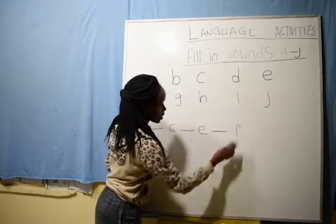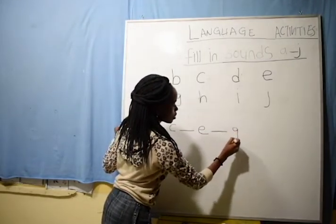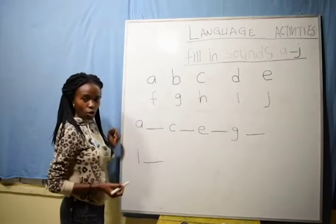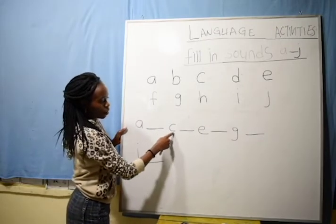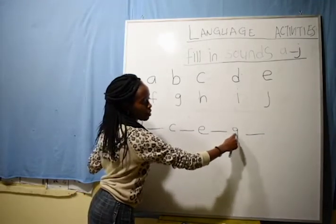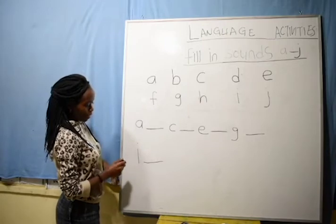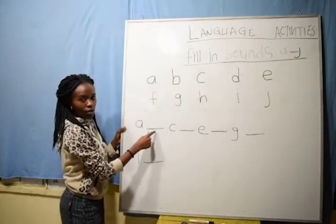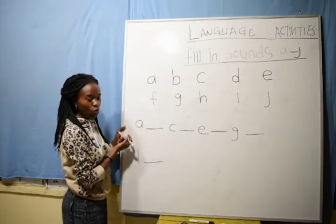Have you seen? So I want us to fill in the missing sound. This one is sound A, K, E, G, E. Then you fill in the missing sound. So let's read together. Sound A — after sound A, the next sound is B for ball. So I want you to write here sound B for ball. Remember, you are filling in the missing sounds.